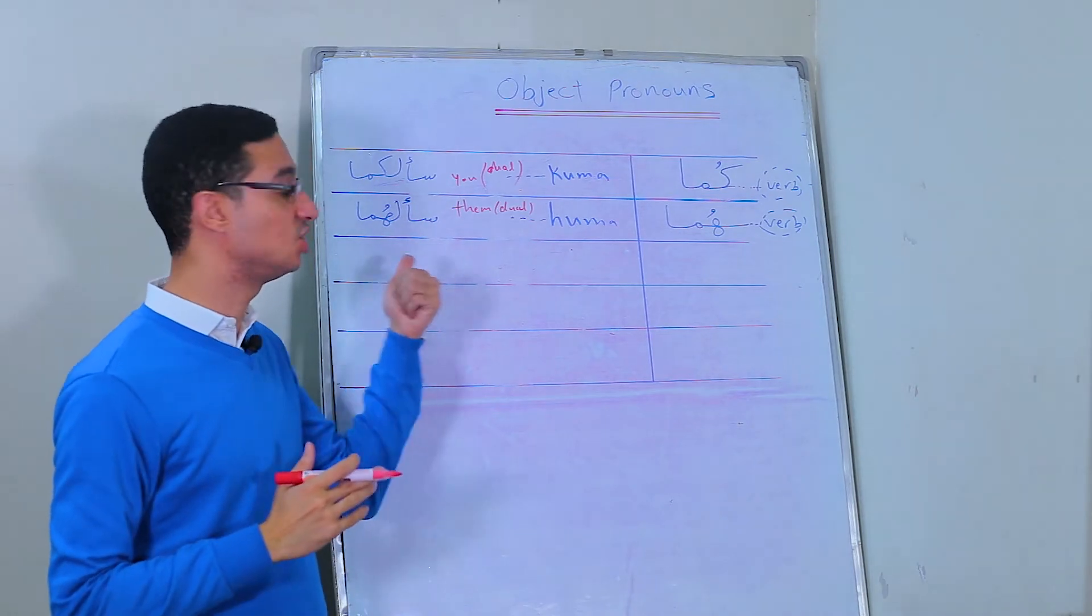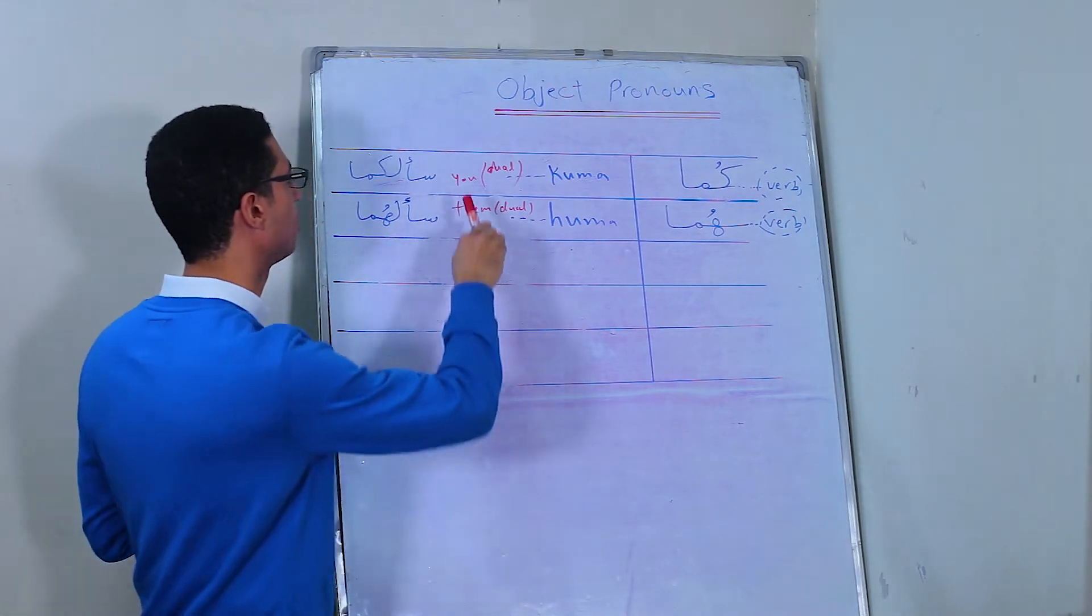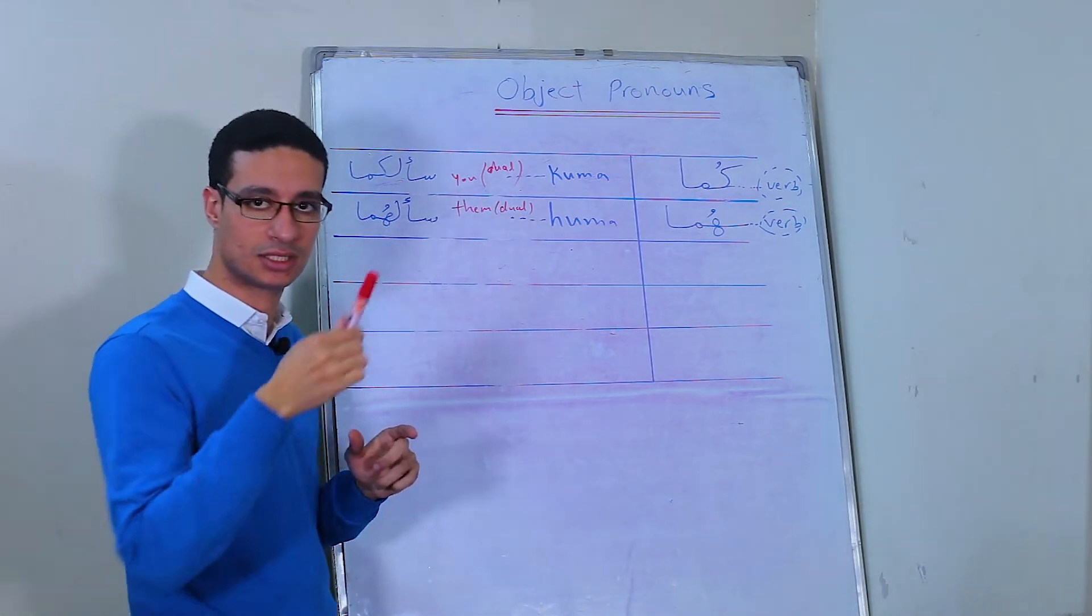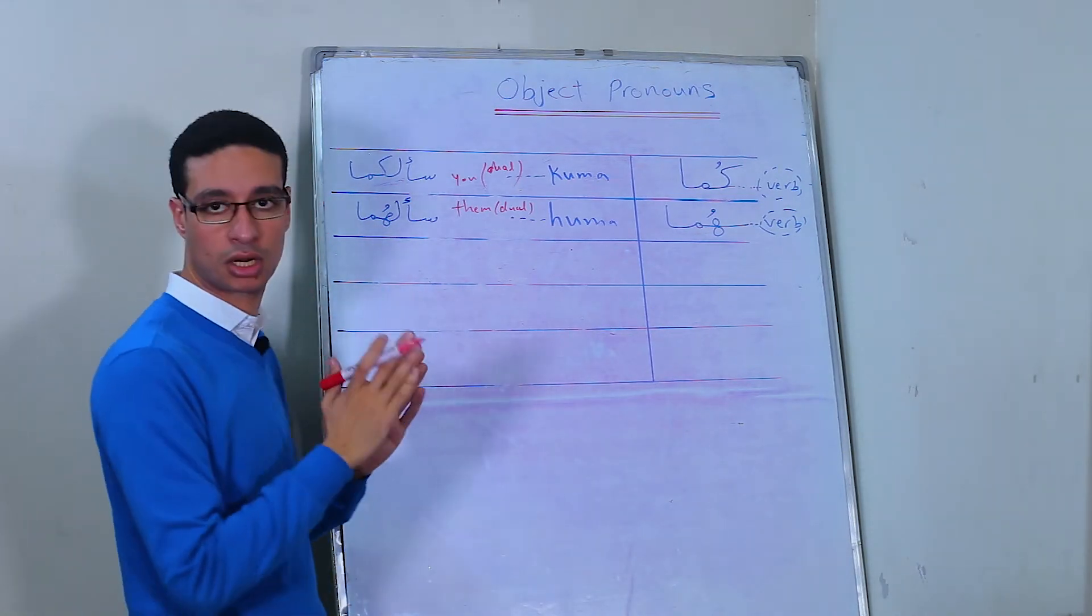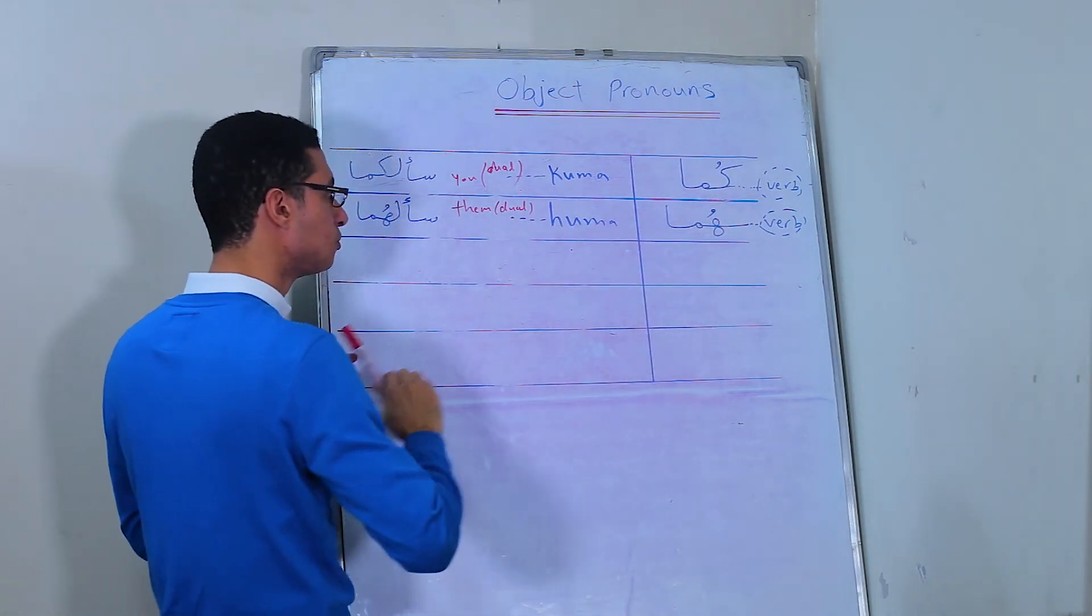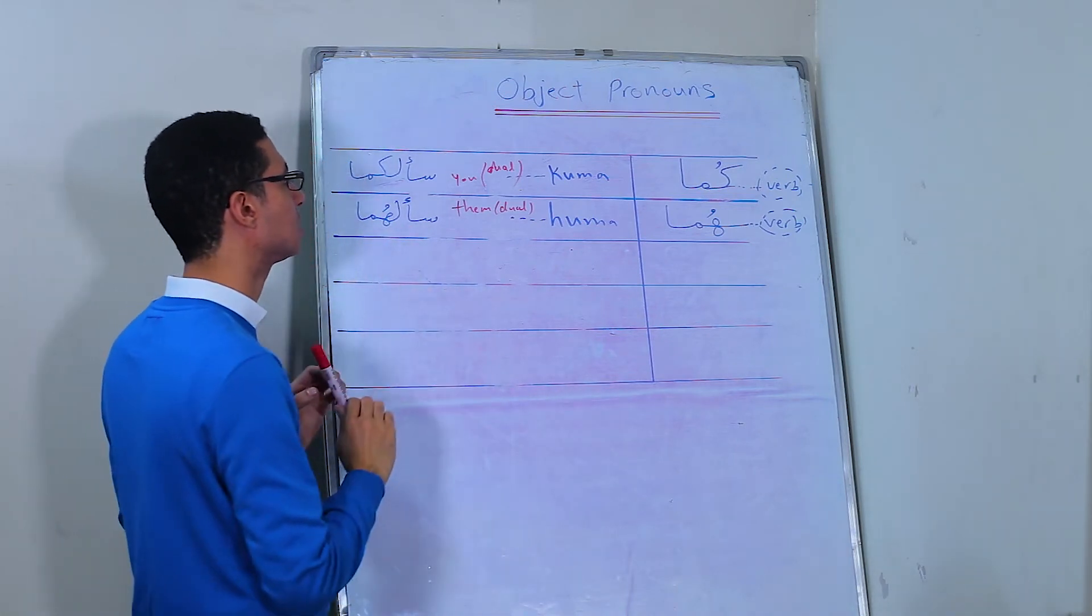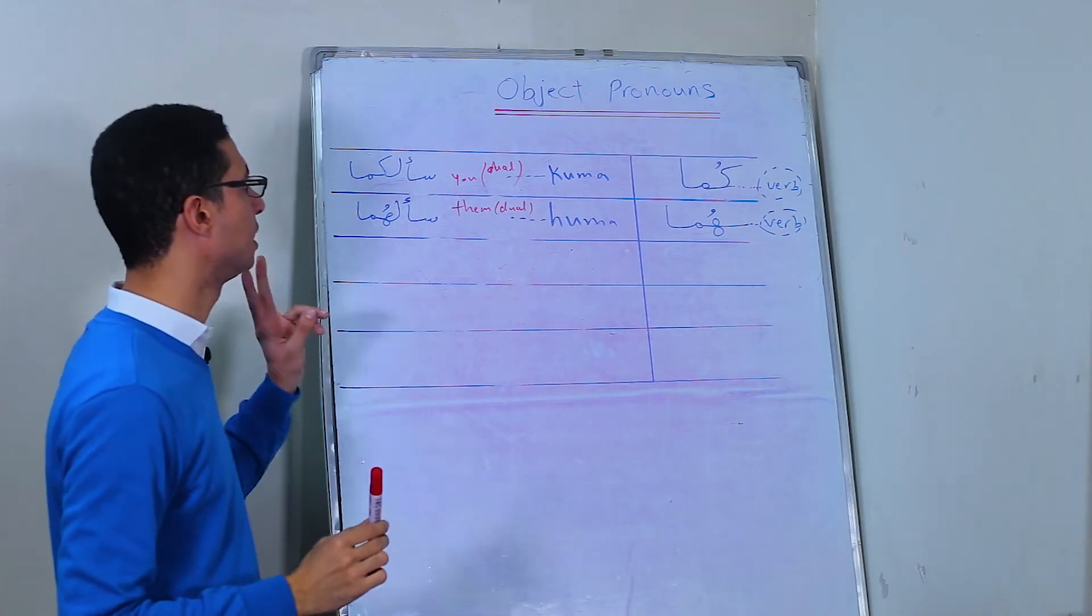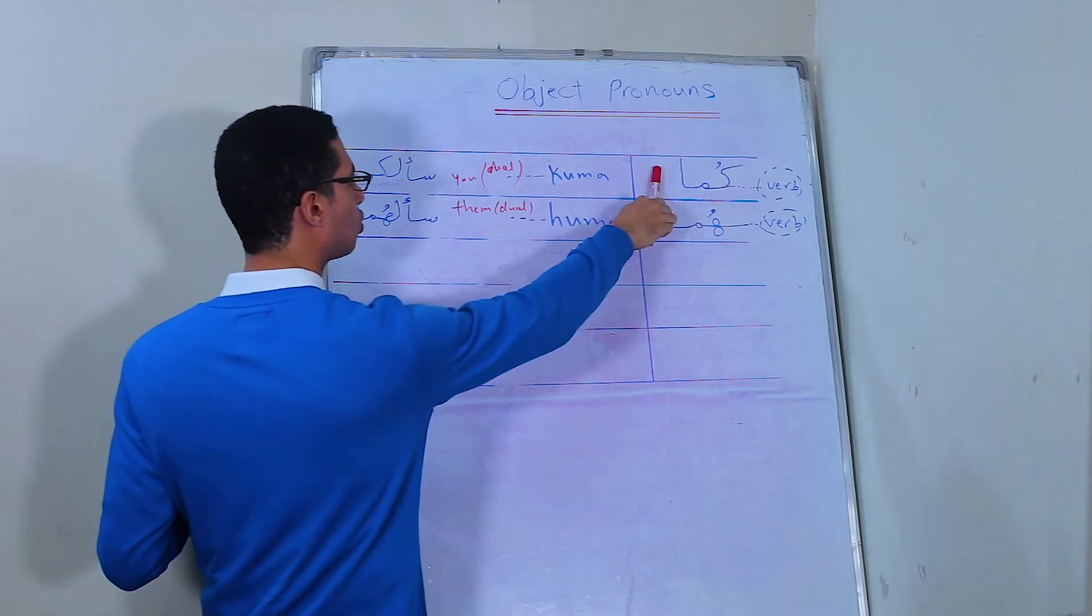The second group is the dual group, and it's كما. It's 'you' if you're talking to two persons. So سألكما, he asked you, if you're talking to two persons. And it doesn't matter if these two persons are guys or girls. So here هما. سألهما, he asked them, but here we are talking about two persons only, not plural. He asked them dual, two persons. سألهما. سألكما.